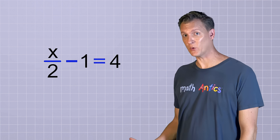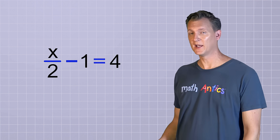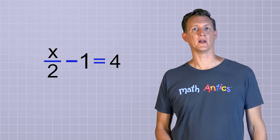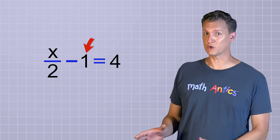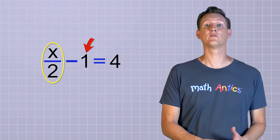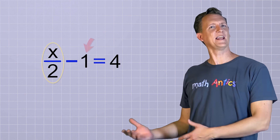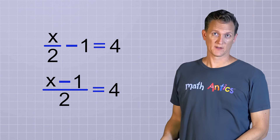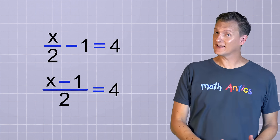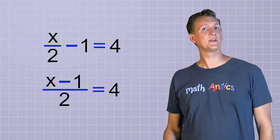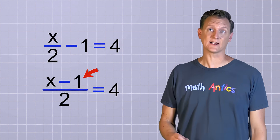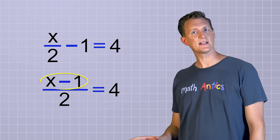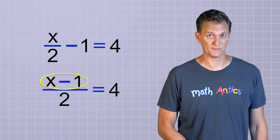Let's try one more important example. Do you remember the second equation we solved — x over 2 minus 1 equals 4? In that equation, the 1 is being subtracted from the entire x over 2 term. But take a look at this slightly different equation: now that the 1 is up on top of the fraction line, it's only being subtracted from the x, and not the 2.